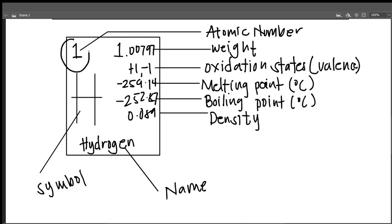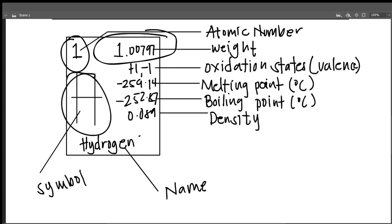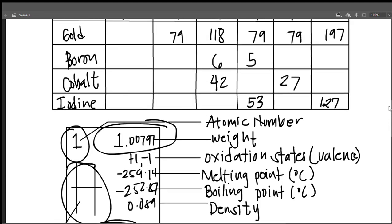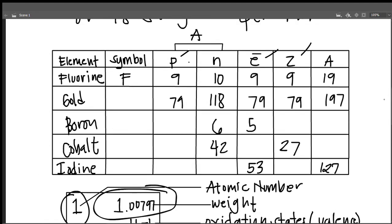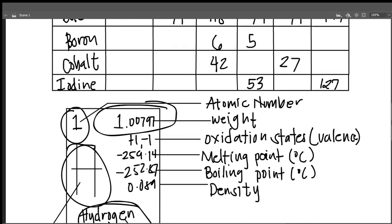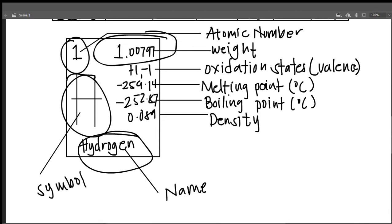We also have the name and the symbol. So what you're finding on the periodic table block is the symbol and the name. Keep this information in mind — you might use this info.